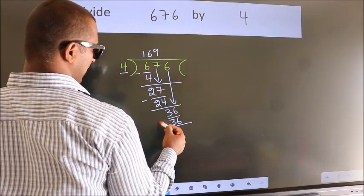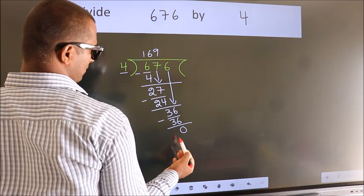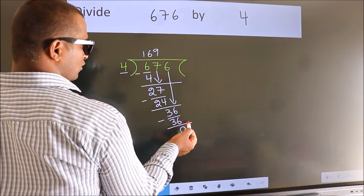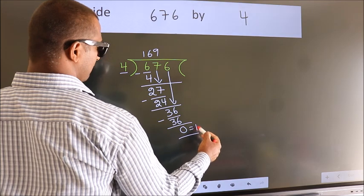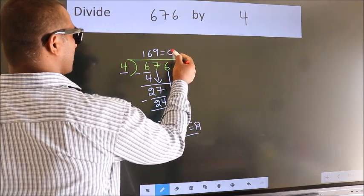Now, we subtract. We get 0. No more numbers to bring it down. So, we stop here. This is our remainder. This is our quotient.